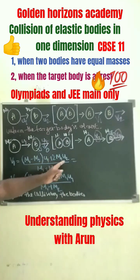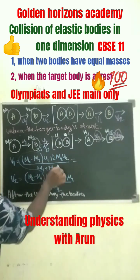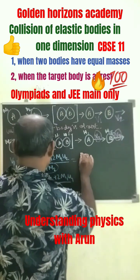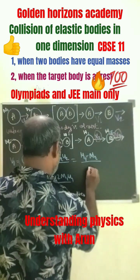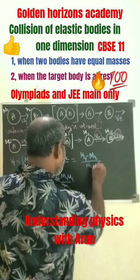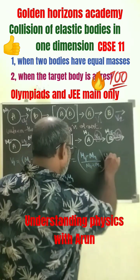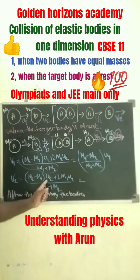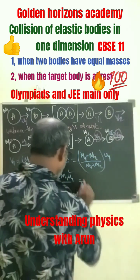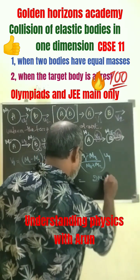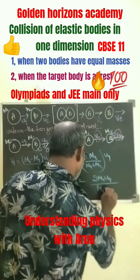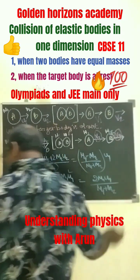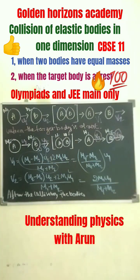We substitute U2 equals 0 into the formulas. So we get V1 equals (M1 minus M2) divided by (M1 plus M2) times U1. And for V2 we get 2M1·U1 divided by (M1 plus M2). The next procedure follows the same approach.